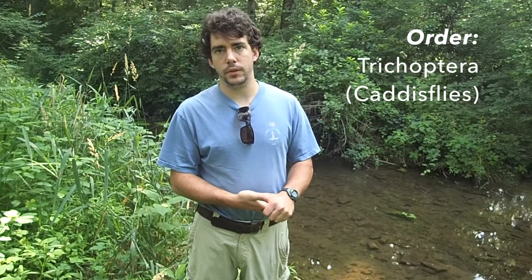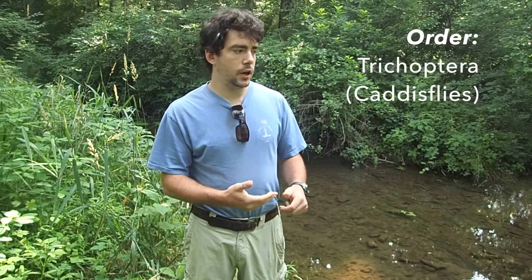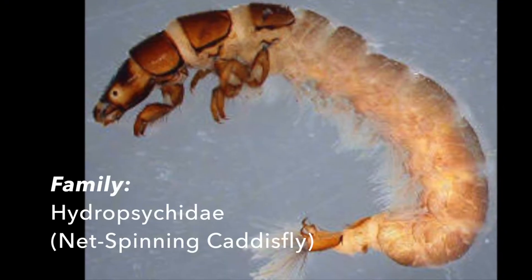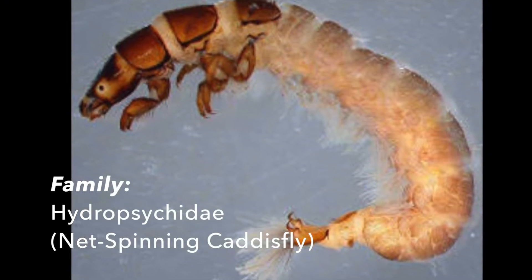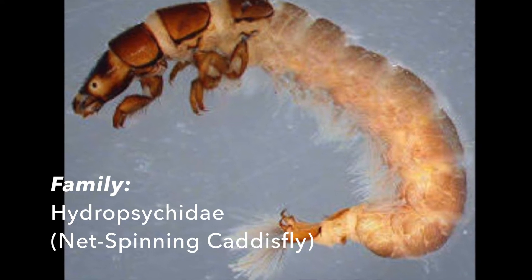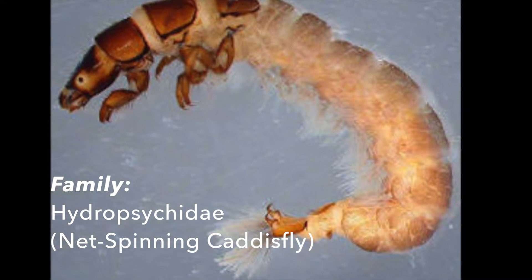A caddisfly is a type of insect. They're in the order Trichoptera, which is a very diverse group of insects, most of which spend their larval period in streams or other aquatic habitats. One that we're focusing on is the net-spinning caddisfly, which are in the family Hydropsychidae.